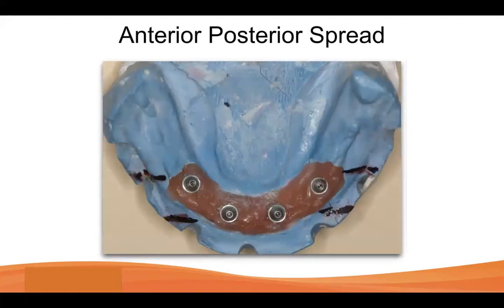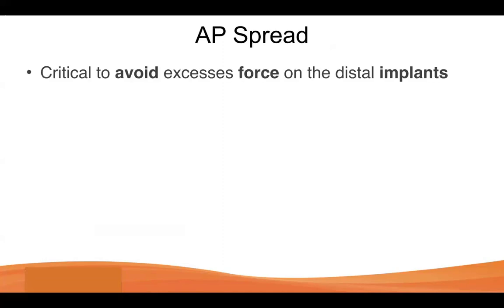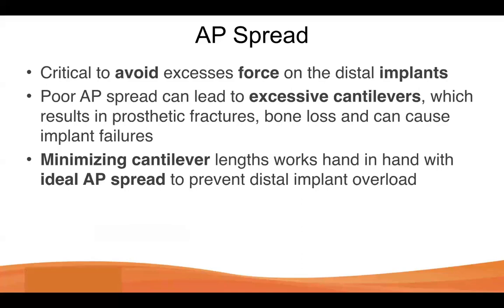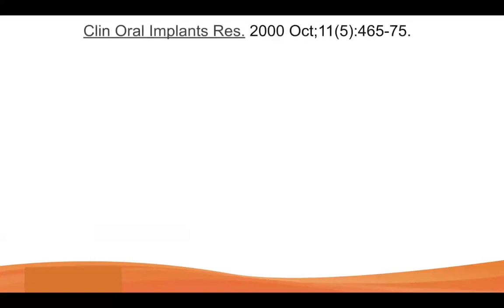So restorative space and bone reduction is the first pillar of a successful full arch case. The second thing to discuss is AP spread — the distance from the anterior implant to the posterior implant. The greater the AP spread, the less cantilever we have. Excessive cantilevers due to poor AP spread lead to excessive forces on distal implants, which leads to implant failure over time. We really want to minimize cantilever lengths and have ideal AP spread on every case, always shooting for the best AP spread possible.